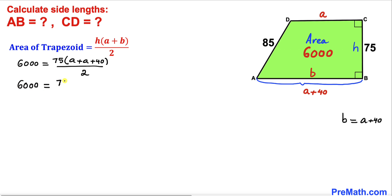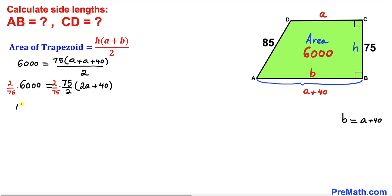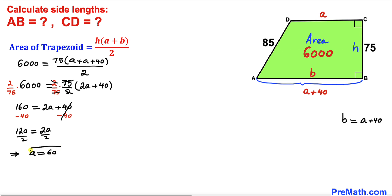Simplifying: 6000 = (75/2) × (2a + 40). Multiplying both sides by 2/75 gives 160 = 2a + 40. Subtracting 40 from both sides: 120 = 2a. Dividing both sides by 2, our value of a turns out to be 60 units.